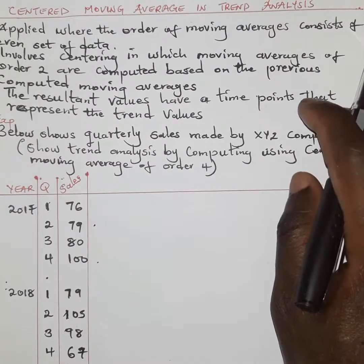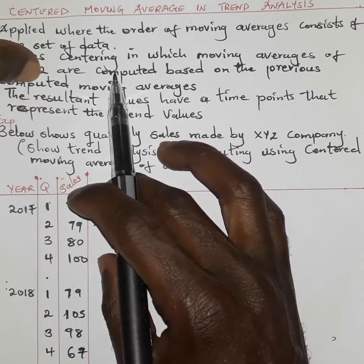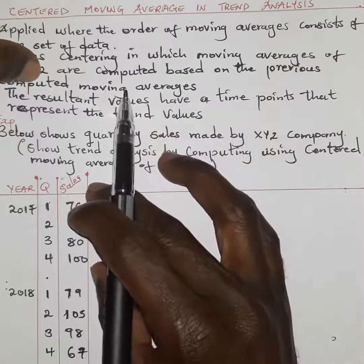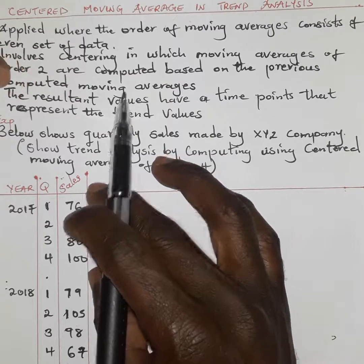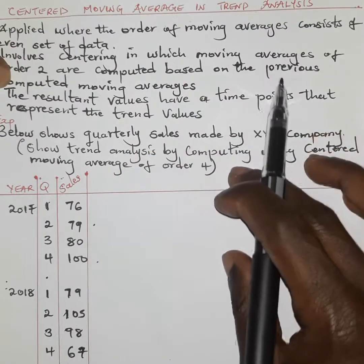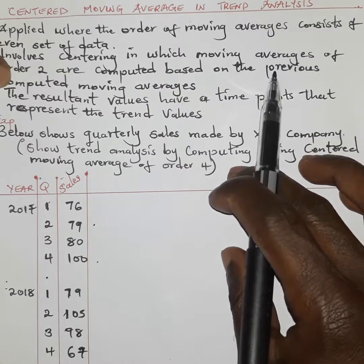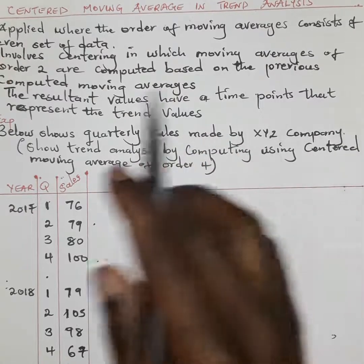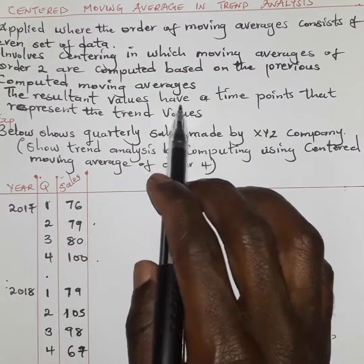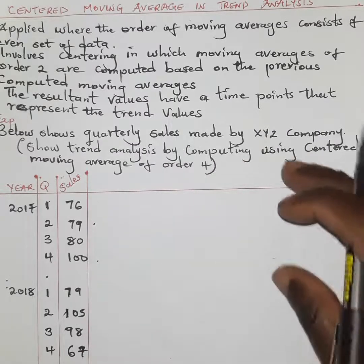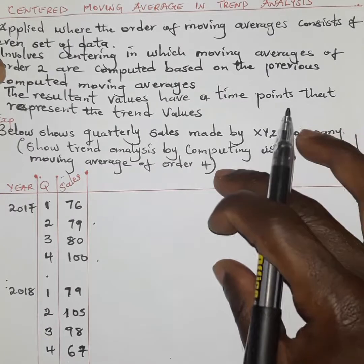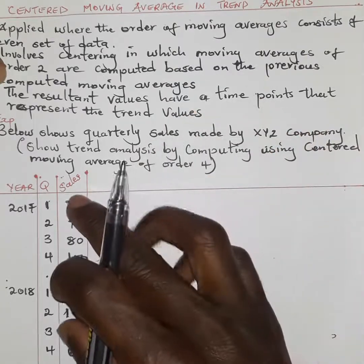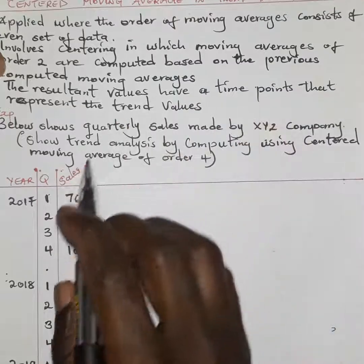We are going to have a first set of computation of moving averages by adding all the figures and dividing by the number of variables. Then we compute the second stage, whereby we get the mean of what we computed in the first stage. The resultant values have a time point that represents the trend values — the average of the two corresponding variables gives an approximate trend.